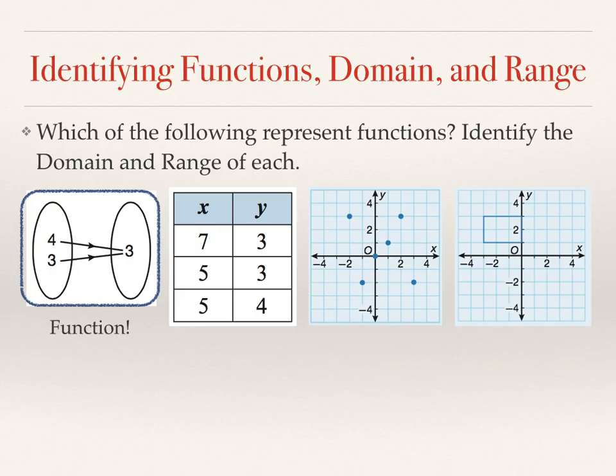The graph of discrete points. This is a function if each x-coordinate has exactly one y-coordinate. For instance, starting with the point negative 2 comma 3. Is there another point on that graph with an x-coordinate of negative 2? No. Then move on to the next point, negative 1 comma negative 2.